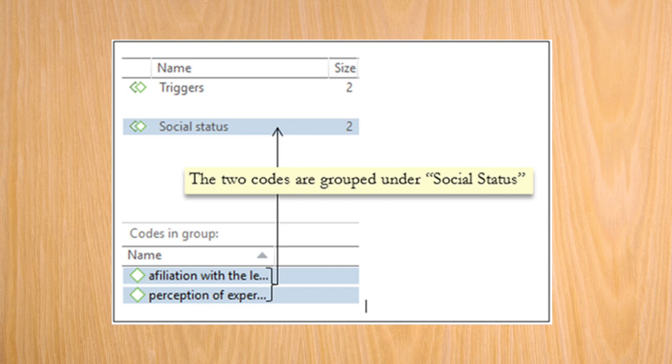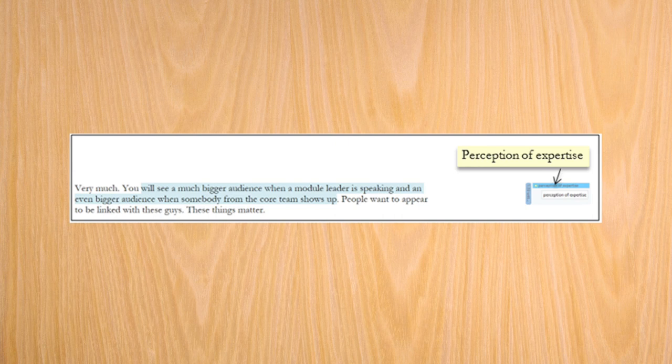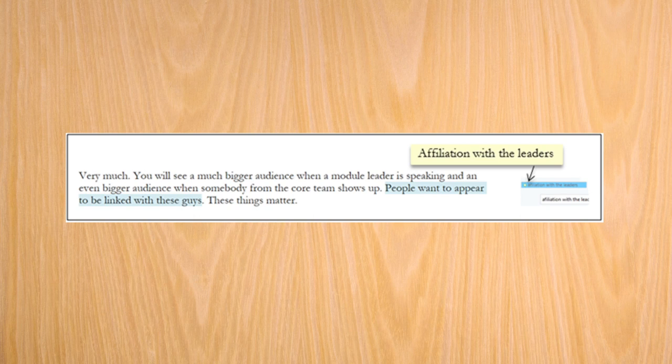I am now going to refer you to the other code groups that I have already created. In addition to triggers, I have created four other groups. One of them is social status. This group combines codes perception of expertise and affiliation with the leaders. Let us look at the corresponding text snippets for these two codes and figure out their underlying connections. Perception of expertise code is attached to the text which says that in offline conferences of users and developers, a larger audience is expected when somebody who is in a leadership position is speaking. Affiliation with the leaders code is attached to the text which says that people want to be connected to the module leaders and members of the project core team.